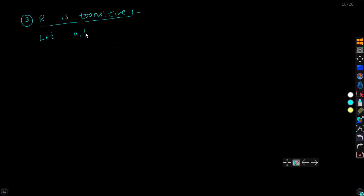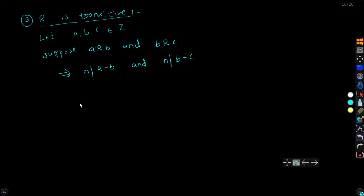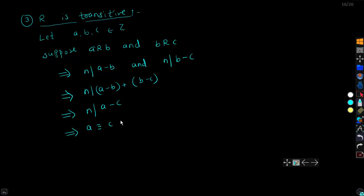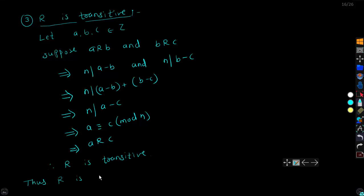Transitivity: Let a, b, c belong to Z. Suppose a is R-related to b and b is R-related to c. This implies n divides a minus b and n divides b minus c. Since n divides both, n must divide their sum, (a minus b) plus (b minus c), which equals a minus c. This implies a ≡ c (mod n), so a is R-related to c. Therefore R is transitive. Thus from (1), (2), and (3), R is an equivalence relation.